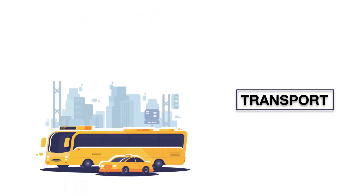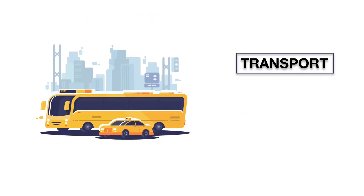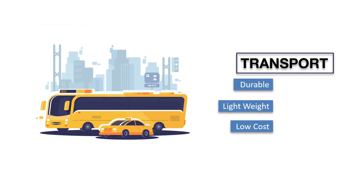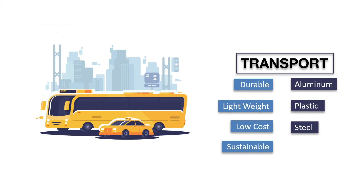First is transport. In case of a question based on transport, the material should be durable, lightweight, manufacturing cost should be low, it should be economical for the user, and it should last long before any wear or tear happens. This can include aluminum, plastic, or steel. Carbon fiber in this case can be debatable — we'll have to consider it on a case to case basis.